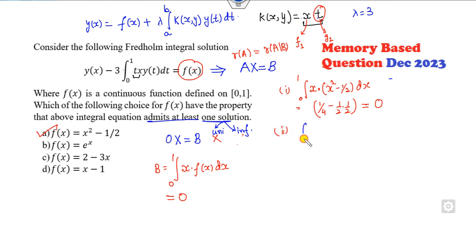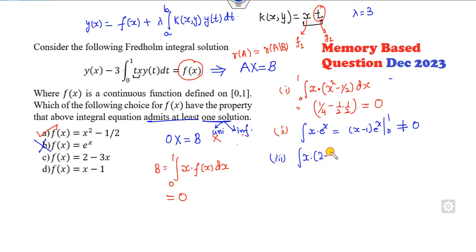Look at the second option: x into e raised to power x. The integration is (x minus 1)·e^x from 0 to 1, which is non-zero. So this option is cancelled. Look at the third option: integration of x into (2 minus 3x). That gives 2x squared over 2 minus 3x cubed over 3 from 0 to 1, which is clearly 0. So this is also a correct option.